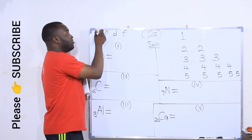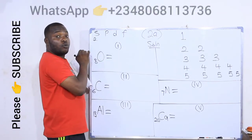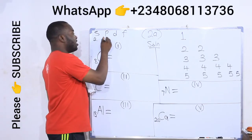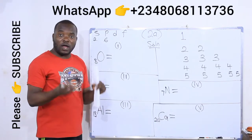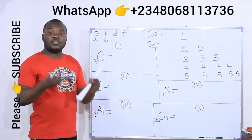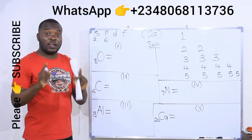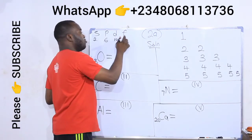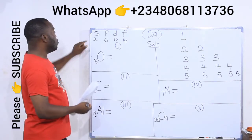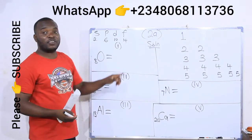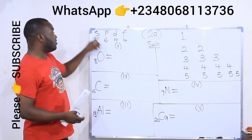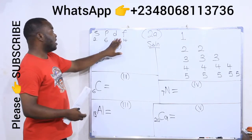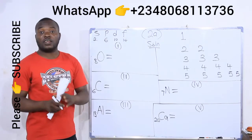The s orbital carries a maximum of 2 electrons — it cannot carry more than 2; it can carry 1 or 2. The p orbital carries a maximum of 6, so p can carry 1 through 6 but cannot carry more than 6. Maximum d can carry is 10, and maximum f can carry is 14. If you know s carries 2, you can find the rest by just adding 4 each time: 2 plus 4 is 6, 6 plus 4 is 10, 10 plus 4 is 14. These are the maximum numbers of electrons each orbital can accommodate.